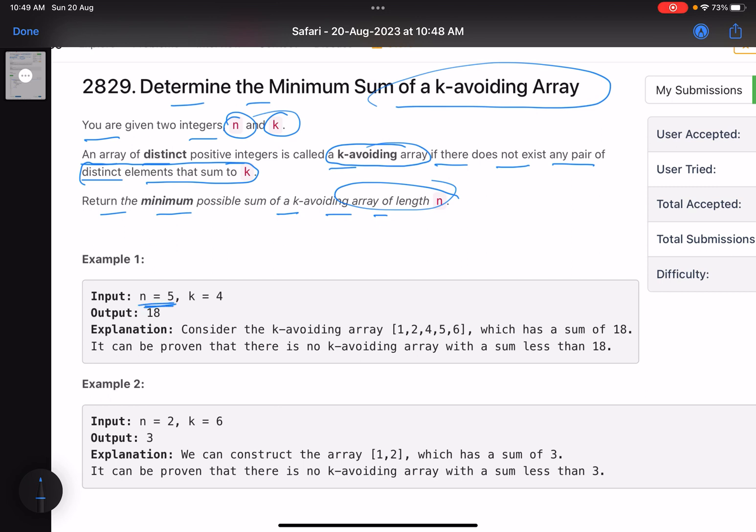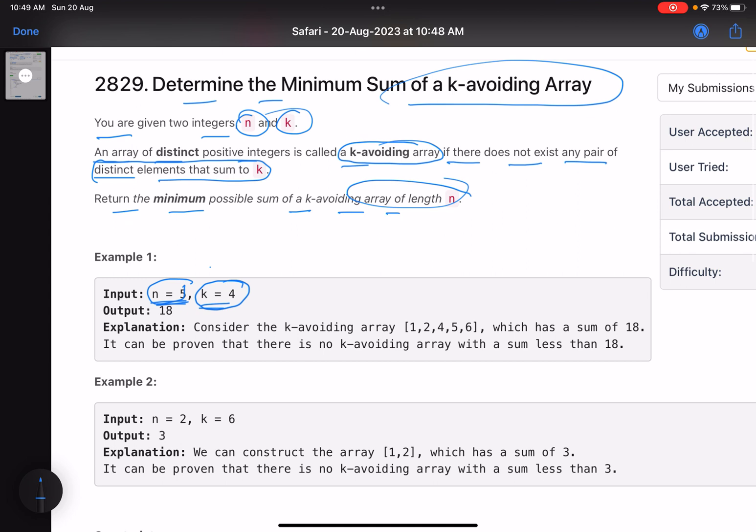For example, n equals 5, k equals 4. We have to make it k-avoiding, so I need 5 elements such that there is no pair whose sum equals 4, and also the 5 elements that I need, their sum should be minimum. Let's do that.